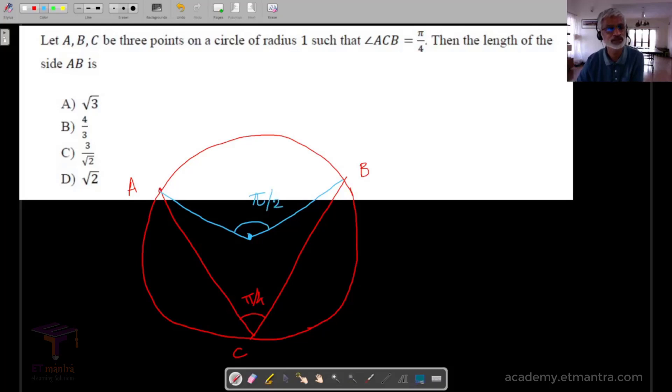And once you realize this is 90, this is the perfect setting for the Pythagoras theorem. What he is asking you is for the value of AB, and AB squared is simply equal to 1 squared plus 1 squared. This implies that AB is equal to square root of 2. So definitely this should qualify as a nice and simple problem.